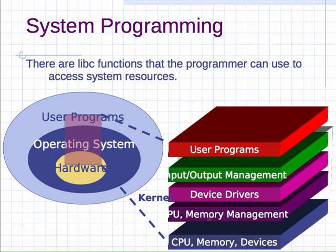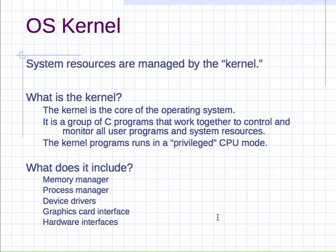Underneath the device drivers are more hardware-related things like the CPU and memory management, and at the very lowest level is the actual hardware — the actual CPU, the actual RAM chips, and actual devices like hard drives. The key takeaway is that there are layers of software above the hardware, and we will go through some of these layers to do file I/O, which is the main focus of this chapter.